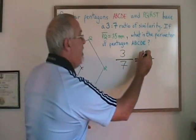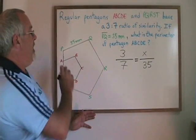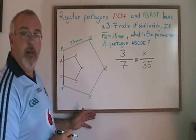If we put an X here, what we are finding is the side length of a similar side in the other smaller pentagon.